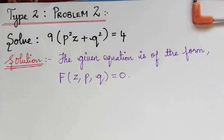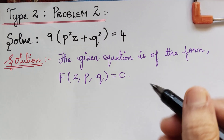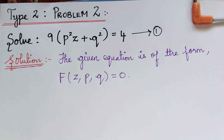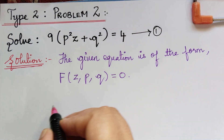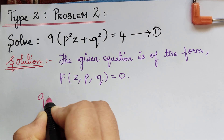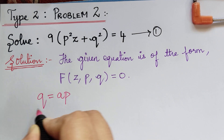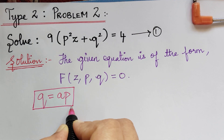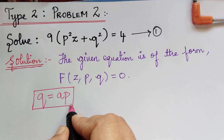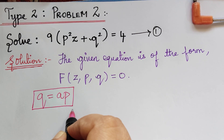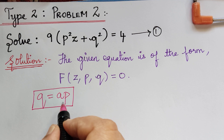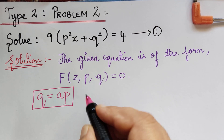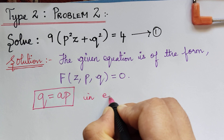First, we write the given equation and mark it as equation 1. The next step is to make a substitution q equal to ap. How this substitution is made has been explained in video lecture 1 of this topic under problem 1 — you may go through it for better understanding. We will now make the substitution q equal to ap in equation 1.